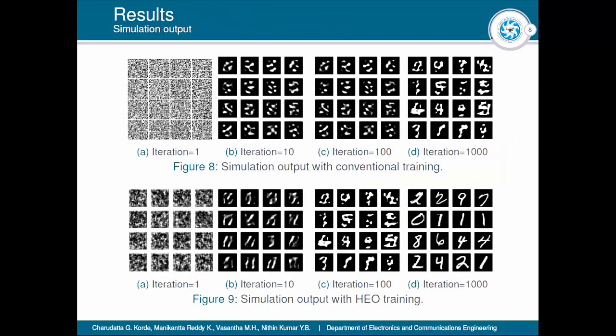Here are some results. Starting with the noisy dataset, after 100 iterations — even after 1000 iterations — the standard approach is not converging. But with my GA-based approach (GADC), I am getting very good results at nearly 1000 iterations. The baseline converges at around 5000 to 6000 iterations, and each iteration takes 5 to 6 minutes.